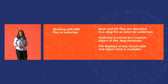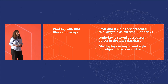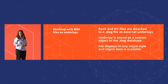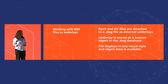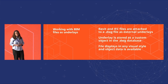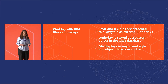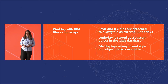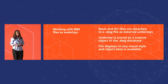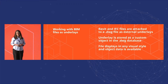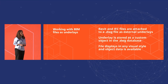So how does it work? IntelliCAD loads the ODA BIM-RV and IFC libraries, and then you can attach Revit and IFC files in a DWG file as an external underlay. You can also import the files, which converts the data to drawing primitives in the DWG file, but mostly I want to focus on the underlay aspect. IntelliCAD stores the underlay as a custom object in the DWG database, and the file is available for viewing and the data is accessible too.